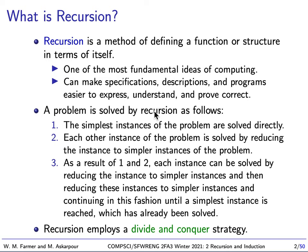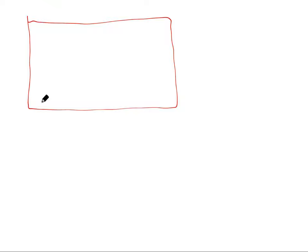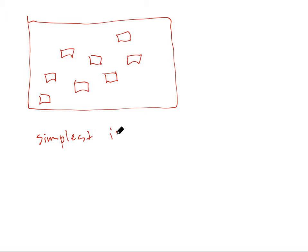So how does recursion work? The way recursion works is we could have a problem, and there's a whole bunch of instances of this problem, and we want to be able to solve all of them. The way we do it is we start with the simplest instances and we solve these first. There may only be one simplest instance, or there may be a bunch. We figure out how to solve each of these individually.